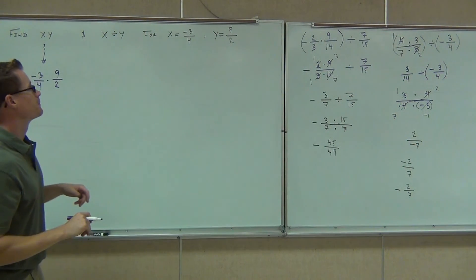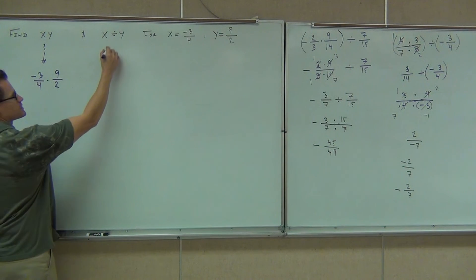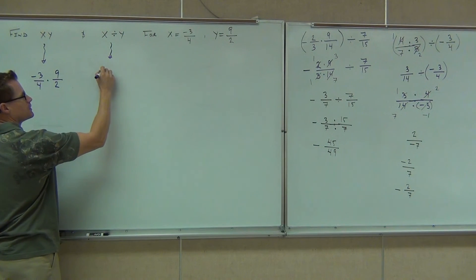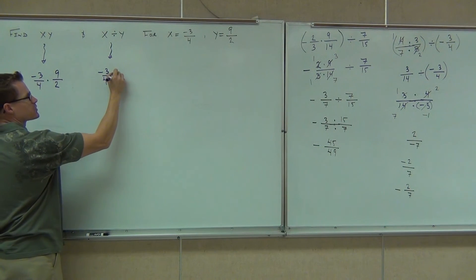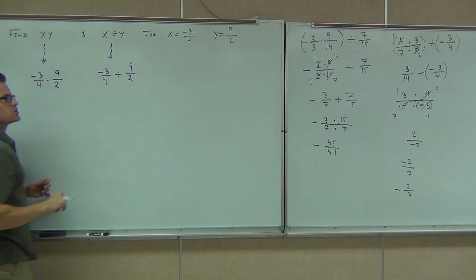Let me do that one. Let's set up the next one. We have x divided by y. Of course, x is still the same. Negative three-fourths. Only this time we're dividing by nine-halves. Hey, do you think we're getting the same answer here and here? No. Two completely different ones. Work them out and see what you get.